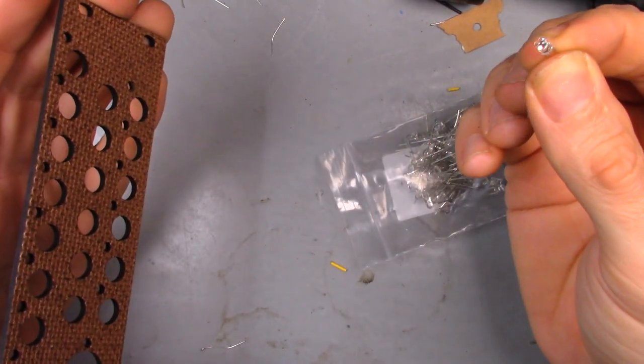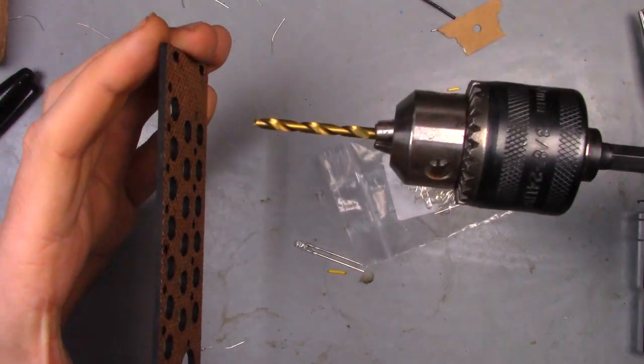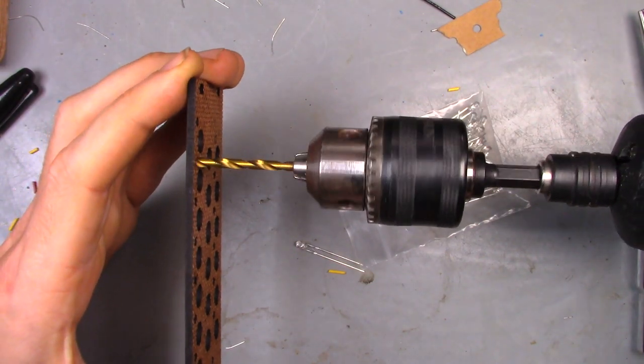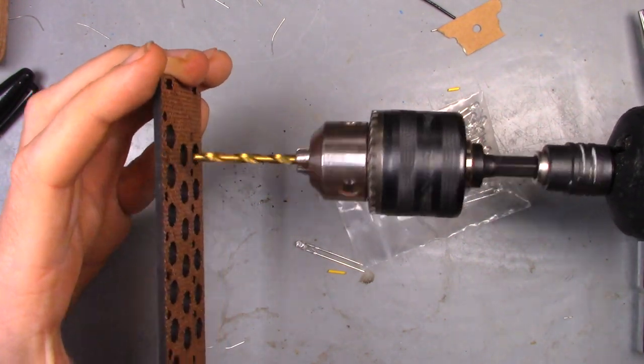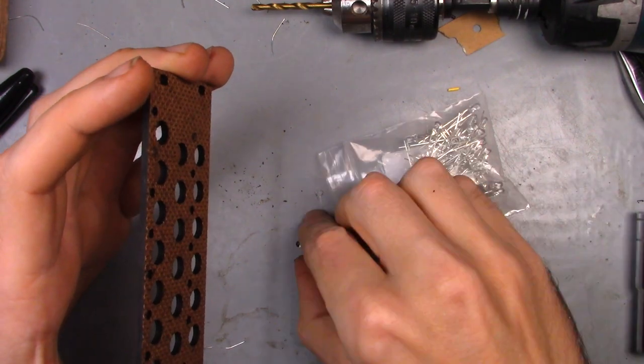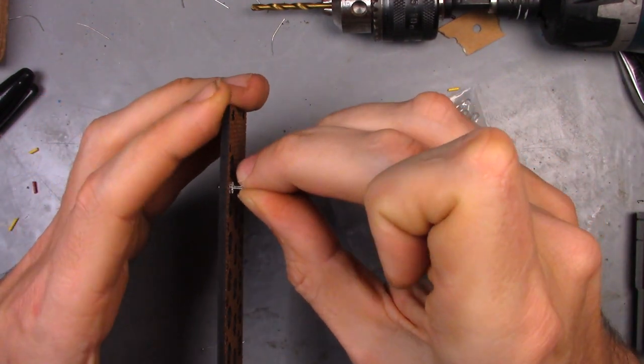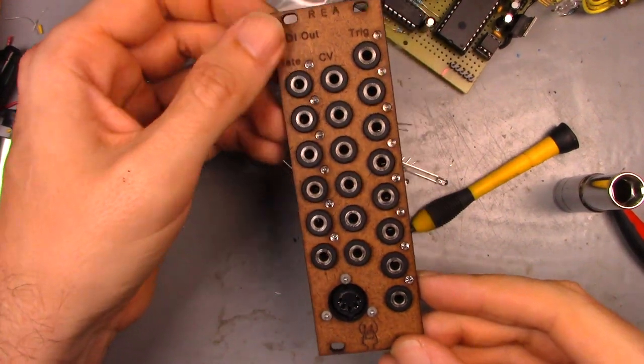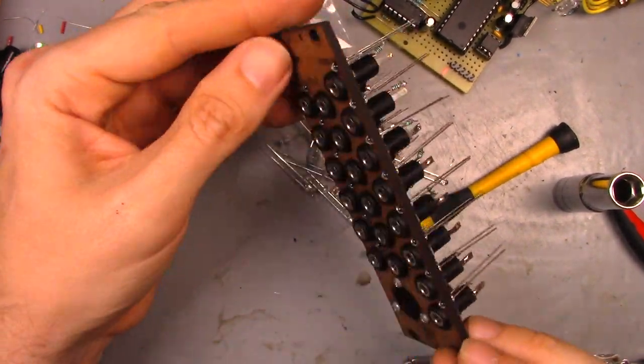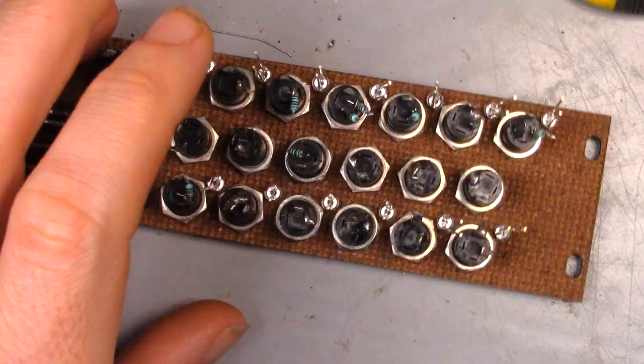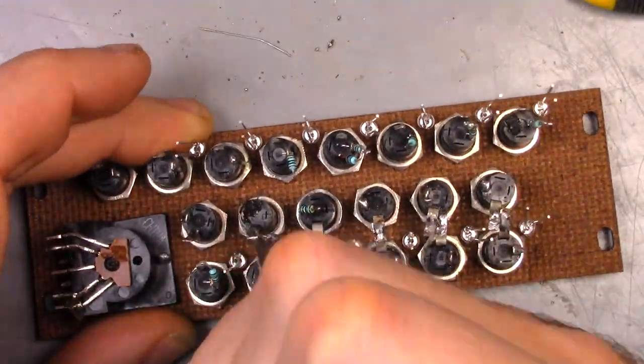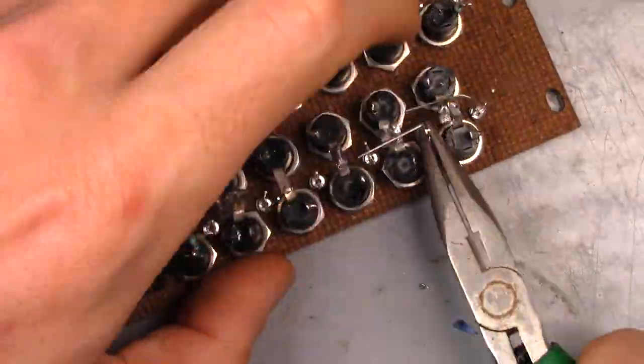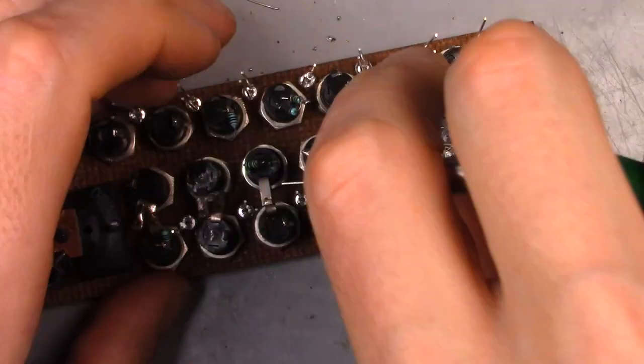I did need to clearance the LED holes a bit. It's always easier to take more material away than it is to put it back. Once that was done, I installed the LEDs and the jacks and started with the solder work. I connected all the grounds together, then I added a current limiting resistor to the trigger output and the LEDs.